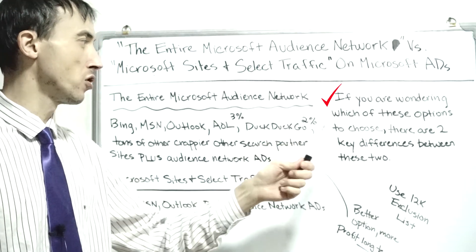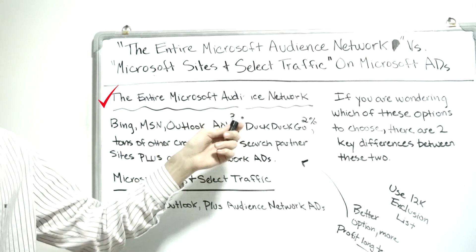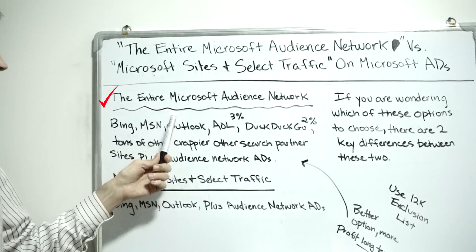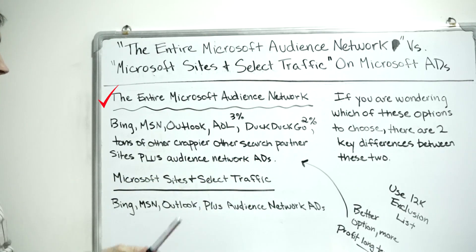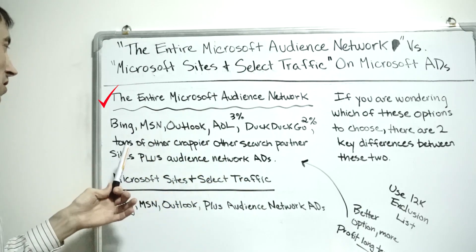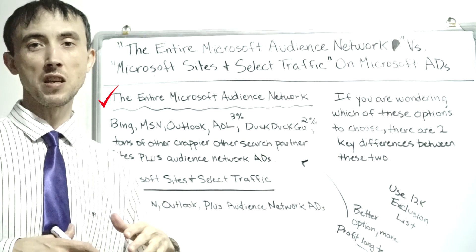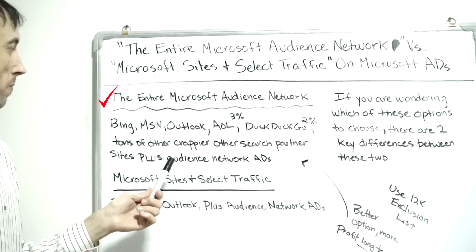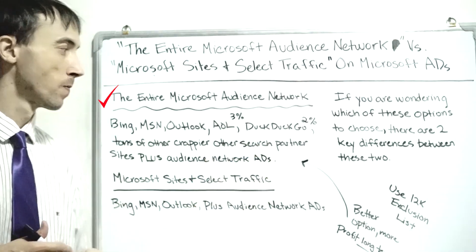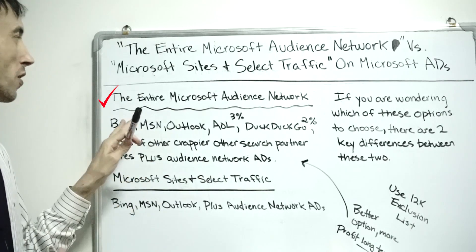There are two key differences between these two options. The entire Microsoft Audience Network will actually get you on Bing, MSN, Outlook, AOL, Duck Duck Go, and then tons of other lower-quality search partner sites that are not real legitimate search engines. You'll also show up on CNN.com if somebody goes to the search bar and types something in. Plus there are audience network display ads that show up across potentially millions of different websites — that's something Bing forces you onto, but there's a way to exclude that which I'll explain in a moment.